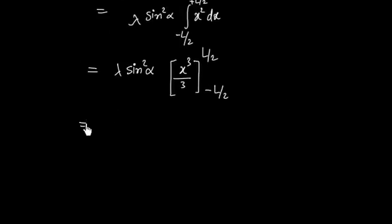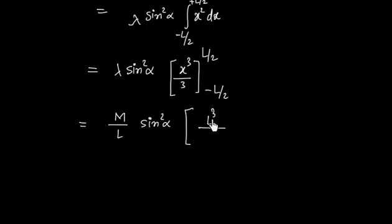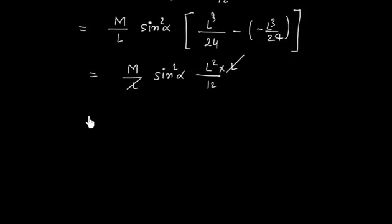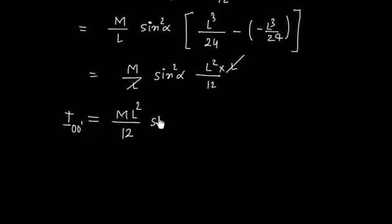We integrate from minus L by 2 to plus L by 2 since the origin is at the center. This gives lambda, which is M by L, times sin squared alpha times L cubed by 24 minus of minus L cubed by 24, which equals M by L times sin squared alpha times L squared divided by 12. The L cancels, so the moment of inertia about OO dash is equal to ML squared by 12 times sin squared alpha.